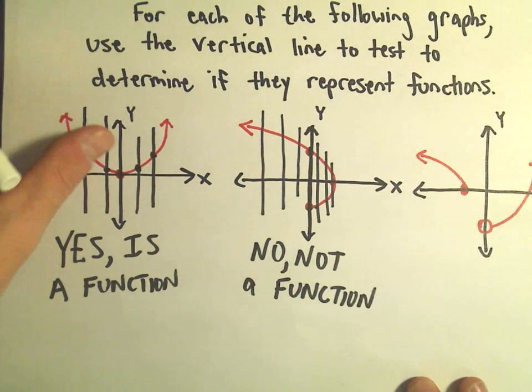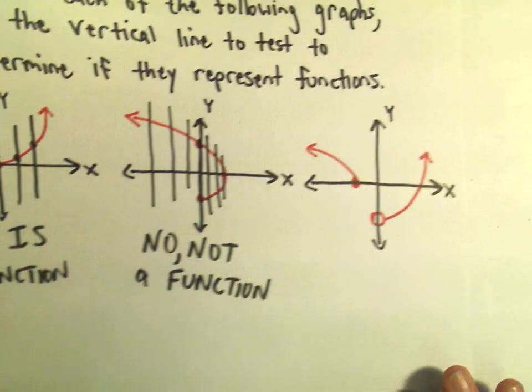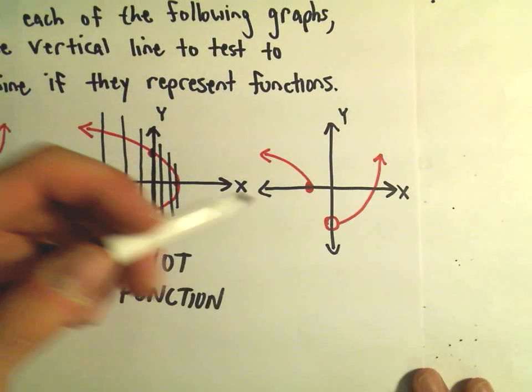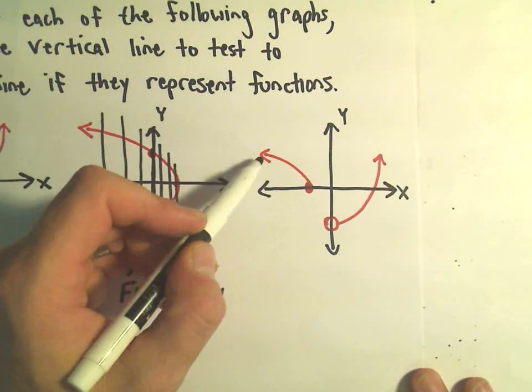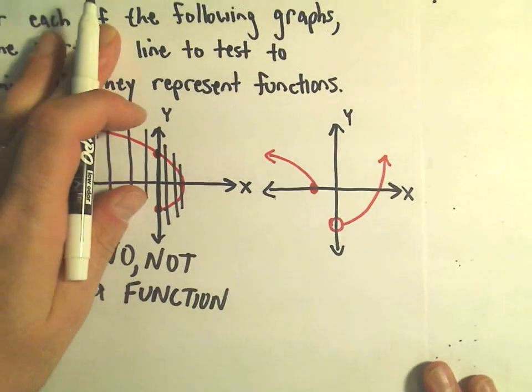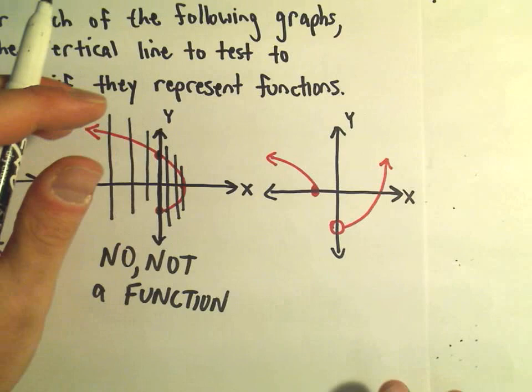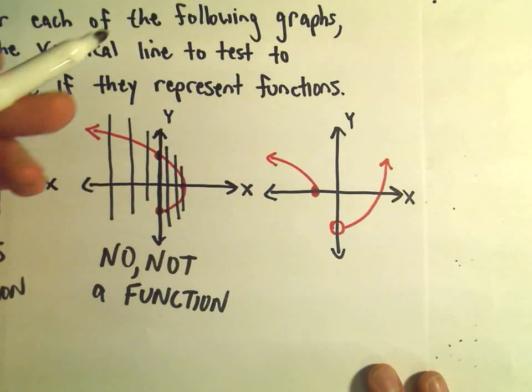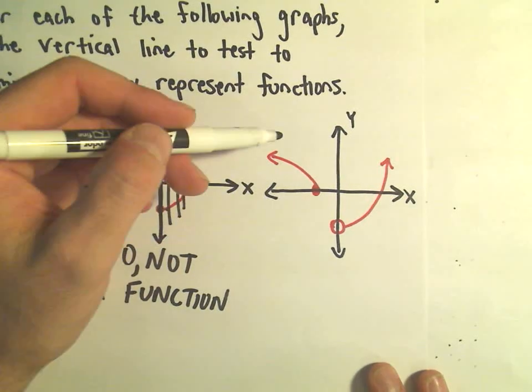And then we have a graph over here on the right. Notice it's not one smooth graph, there's a break in it. If it's not kind of one smooth piece, we say it's not continuous. That's okay. A graph could be not continuous and be a function, and I think this one would be a function.